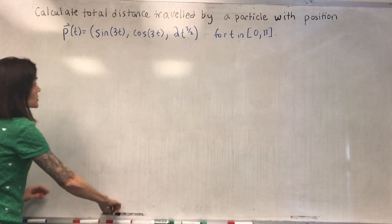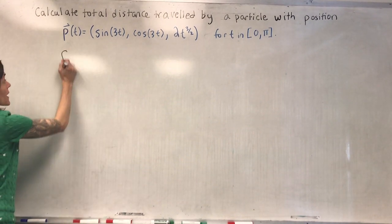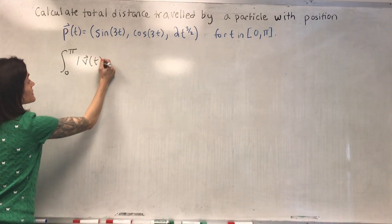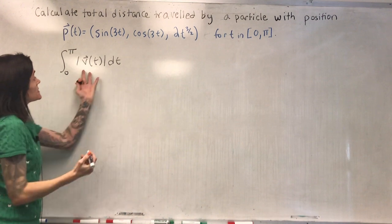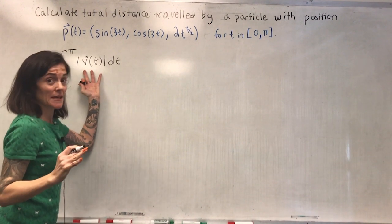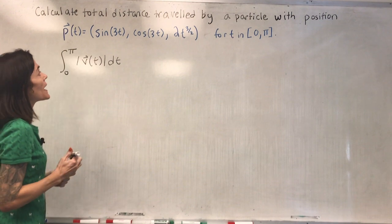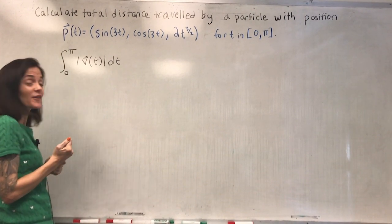Here we know we integrate zero to pi of the magnitude or length of velocity. This here, this is the speed. This is a number. We integrate this zero to pi, and we get the total distance traveled by this particle.